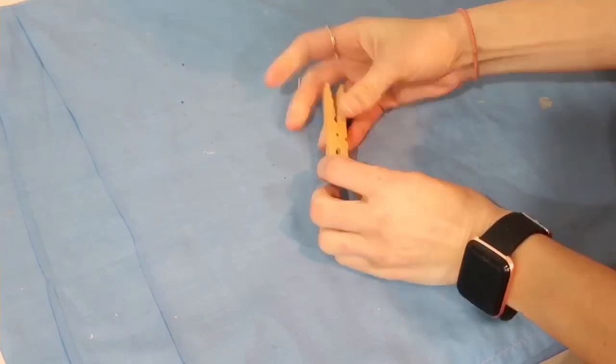This third project is super simple. I'm taking four of these clothes pins, again taking the spring out and gluing them back together like I did in my previous project. And I'm going to need only four of them.